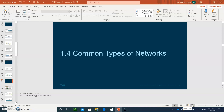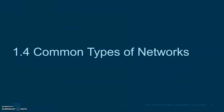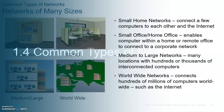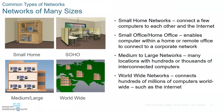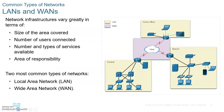We are on part two of module one. Let's talk about the common types of networks — remember to take notes and submit them as homework. There are four types of networks: small home/small office, home office, medium/large such as on campus, and the internet, a worldwide connection where networks connect to each other.